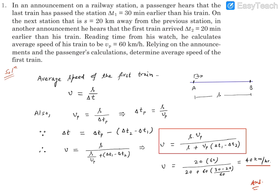Reading time from his watch, he calculates average speed of his train to be Vp equals 60 km per hour. Relying on the announcements and the passenger's calculations, determine average speed of the first train.